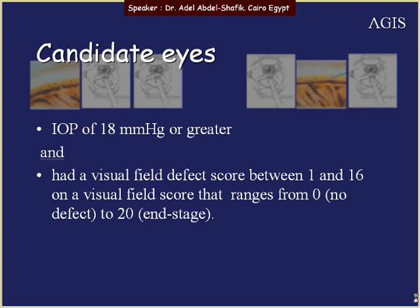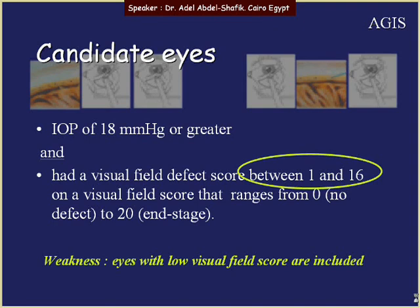Candidate eyes needed to have an IOP of 18 or greater with field changes scored between 1 and 16, on a scale ranging from 0 to 20, where 0 means no defect and 20 represents end stage. Any patient with a score between 1 and 16 could be included. One weak point is that eyes with low visual field scores of 1 or 2 could also be included.